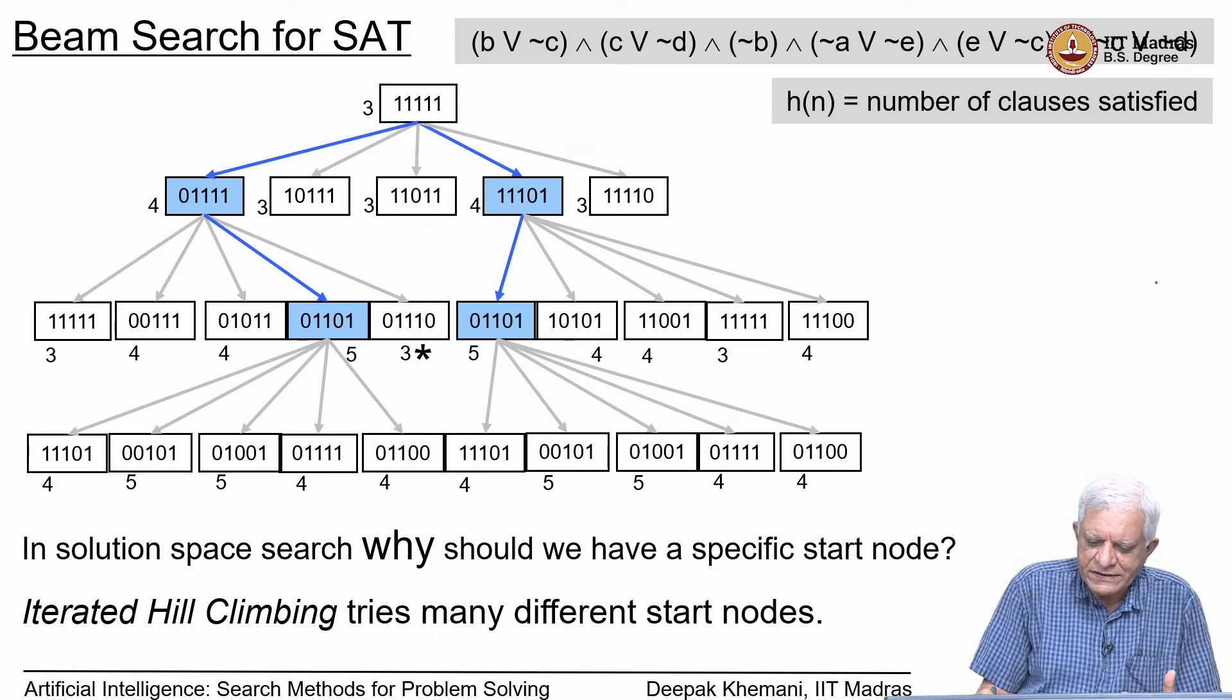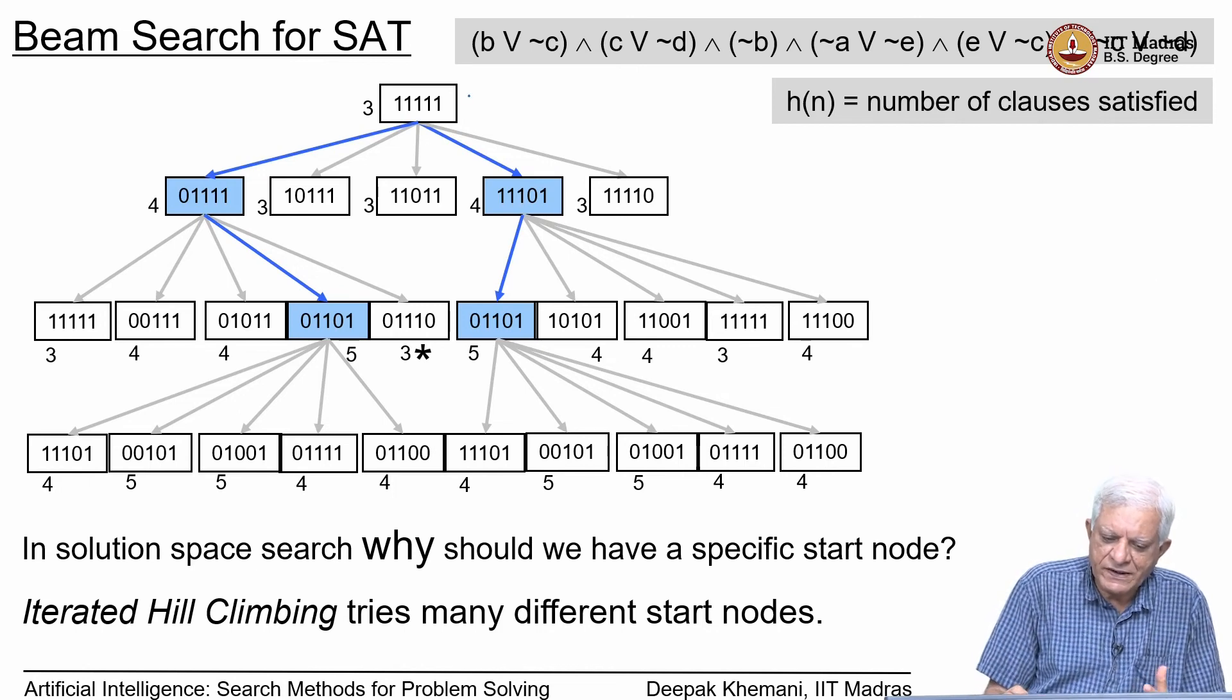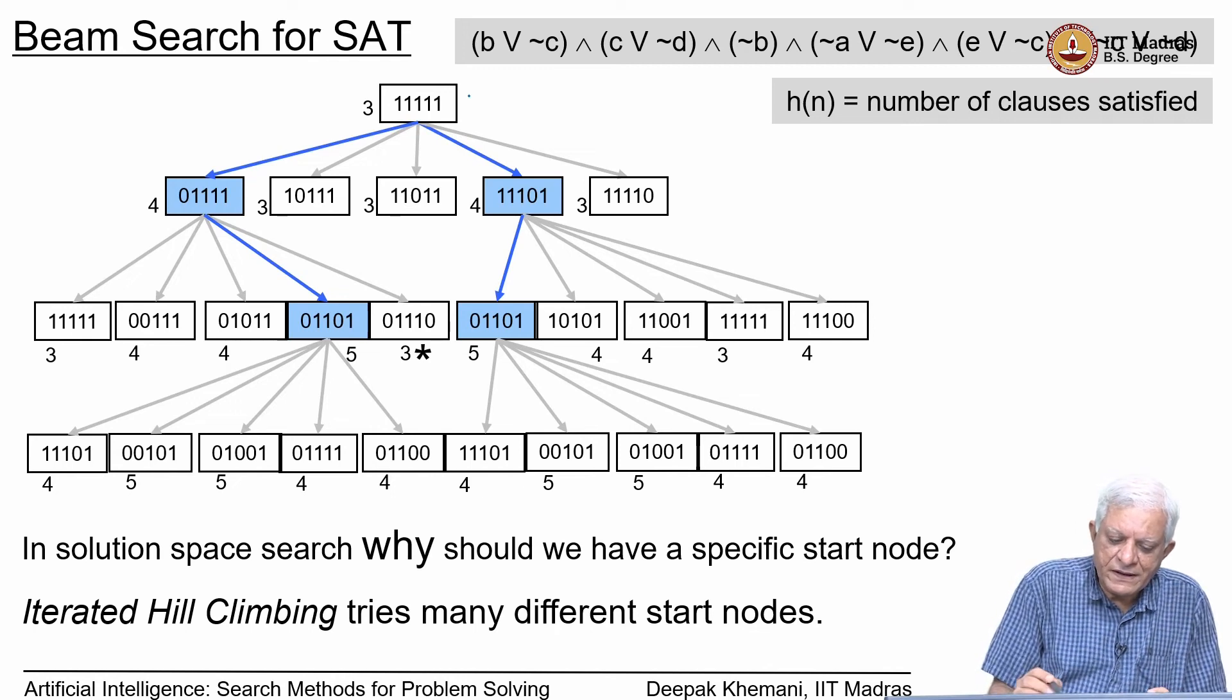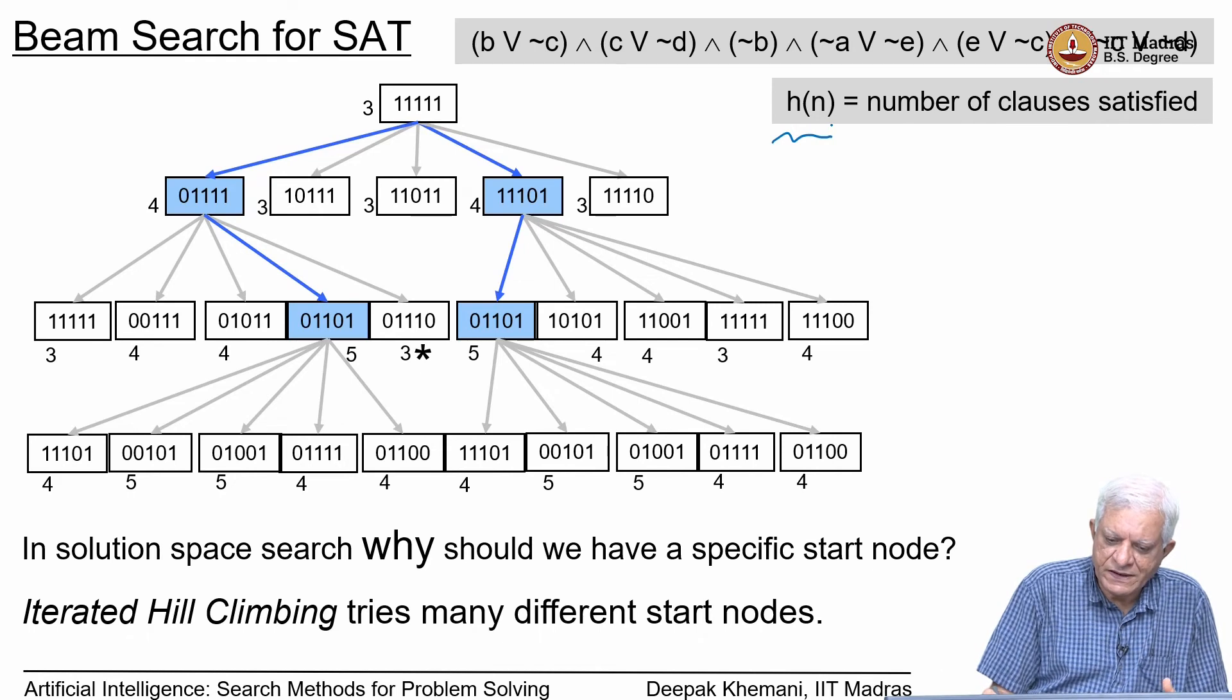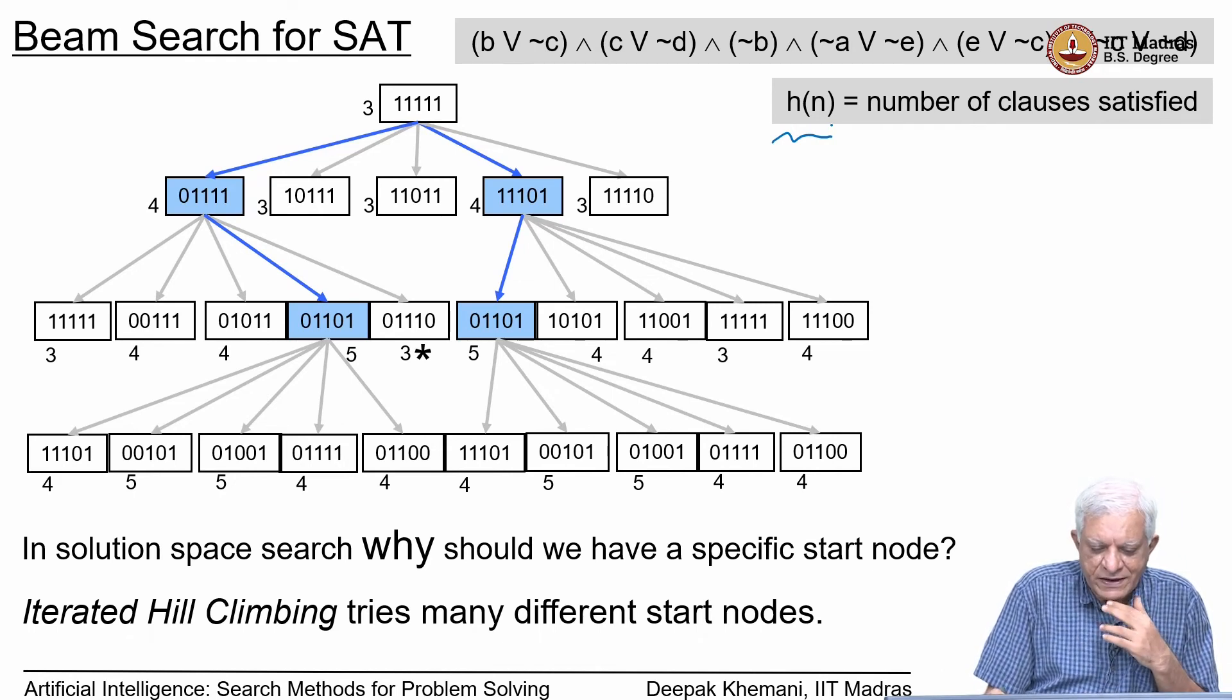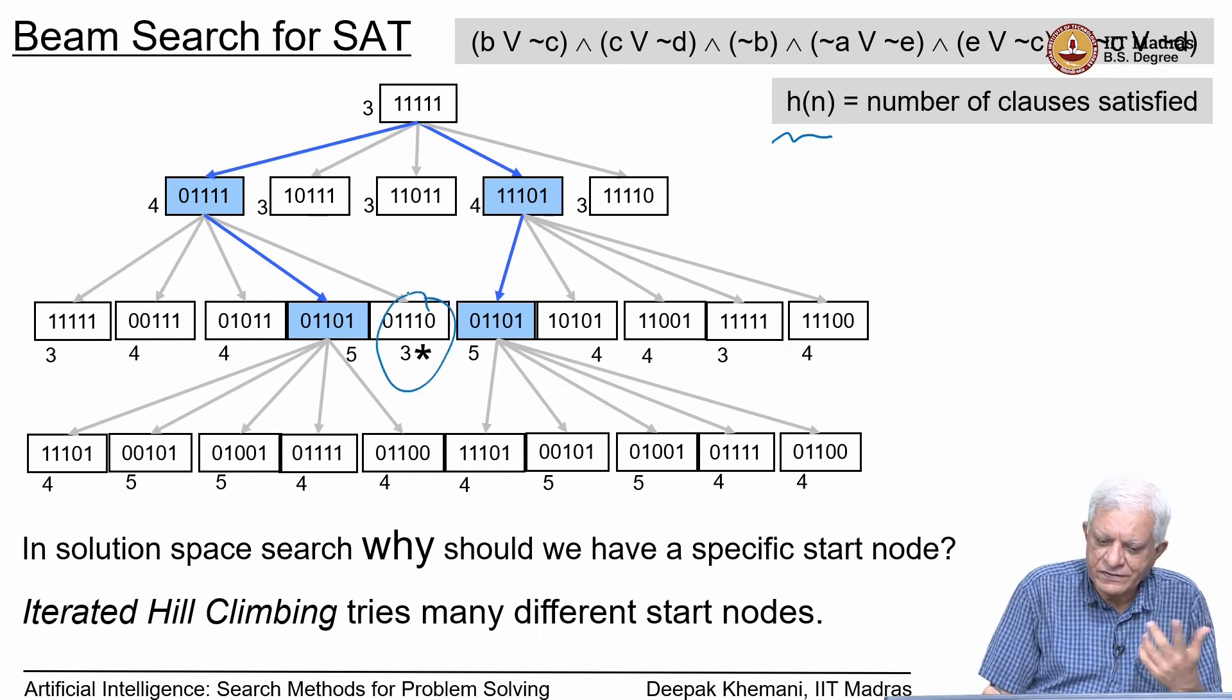This is, again, the beam search example that we had seen. We said that we chose one starting point, which is five ones here. Then we found that with a beam width of two, after two rounds, it reached local maxima. In the third round, it could not reach a heuristic value of six. Remember that the heuristic function was number of clauses satisfied. Since there are six clauses, the solution will have all six satisfied. We had also observed that if you had started from this place instead of 1, 1, 1, 1, 1, you would have reached the solution.